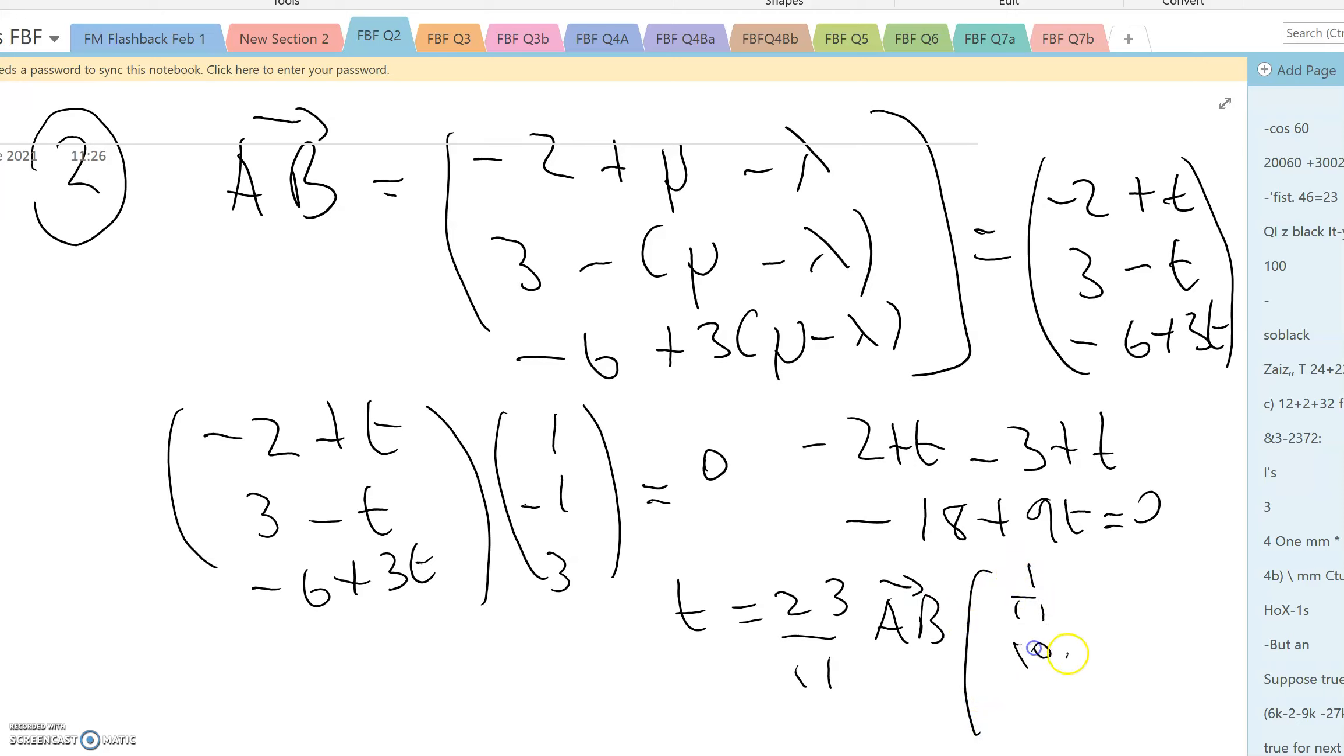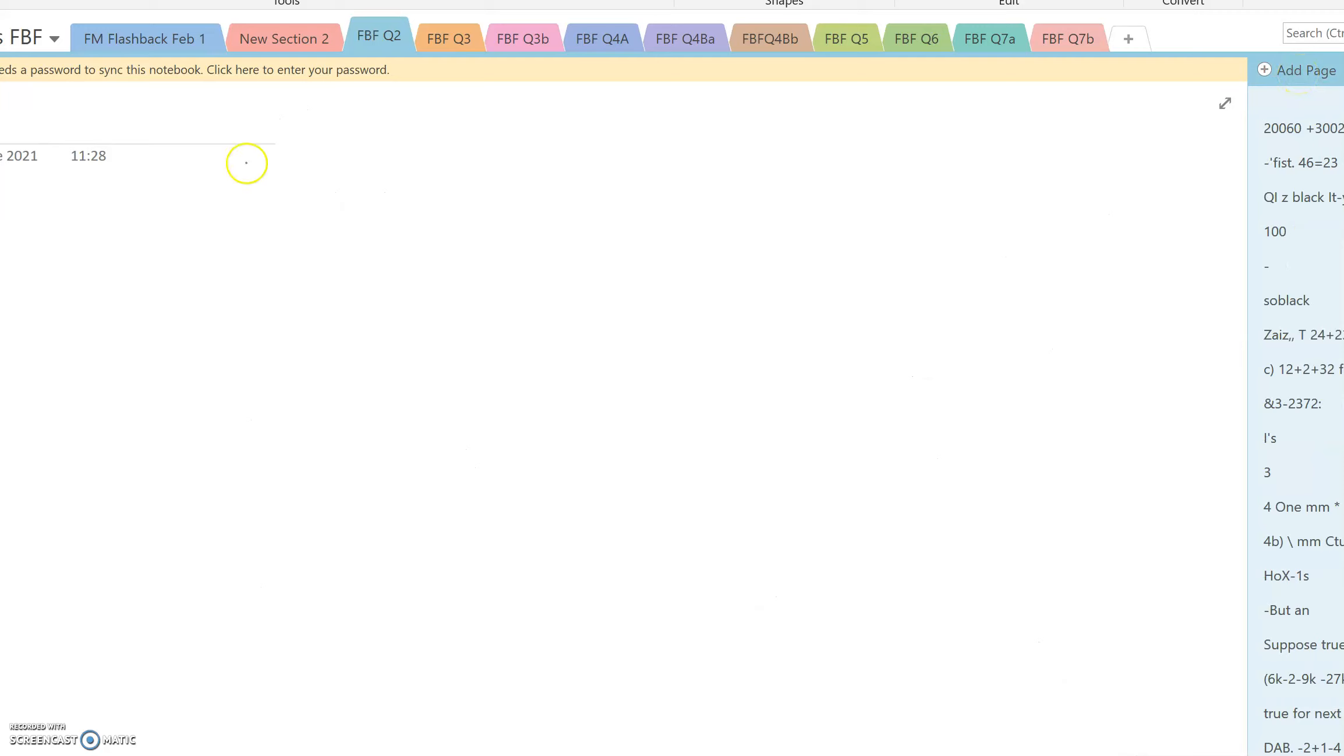And that in turn means that the vector AB is 1 over 11, 10 over 11, and 3 over 11. And that means that the modulus of AB, which is the same as the shortest distance, is 1 over 11 of 1 squared plus 10 squared plus 3 squared. So it's 1 over 11 of root 110.